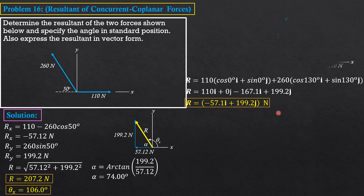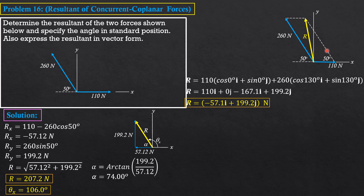For the third solution, redraw the figure and apply the parallelogram law using the law of cosines. This gives the resultant R. From the properties of a parallelogram, the parallel side is also 260 Newtons, and the angle between the 260 N force and the horizontal is 50°. By the cosine law: R² = 110² + 260² − 2(110)(260)cos 50°.